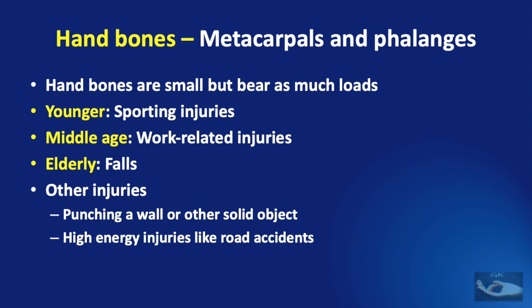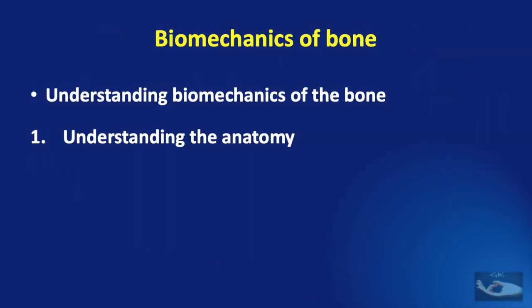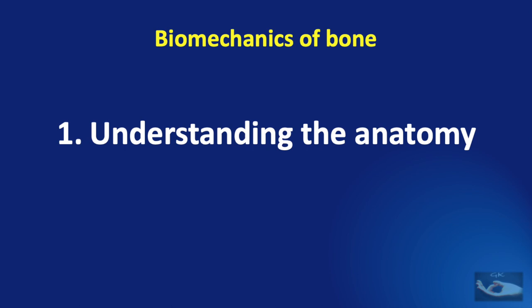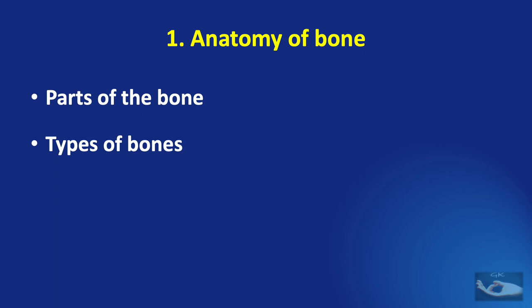Understanding these fractures before managing them is very important. And looking at the pattern of injuries, we find that understanding the basics of fractures of metacarpals and phalanges would mean that we need to understand the biomechanics of bone. And to do this, we need to understand the gross anatomy of the bone and the properties of the bone. Let us try to understand this gross anatomy under the headings of parts of the bone, types of bone tissues that are present, the composition of the bone, and the cells that are present within the bone.